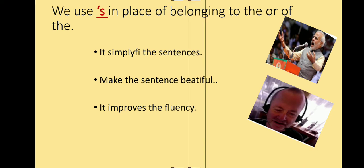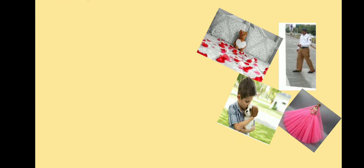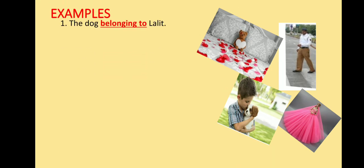A few more examples for understanding. See the first example: 'The dog belonging to Lalith.' Whose dog is this? Lalith. So, Lalith's dog — the owner of the dog is Lalith. We can simplify this sentence and write 'Lalith's dog.' The apostrophe and S shows the ownership of the dog. Who is the owner of the dog? Lalith. Lalith's dog means the dog belonging to Lalith.